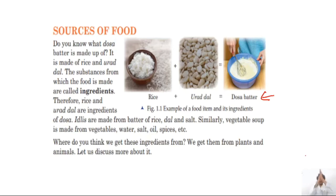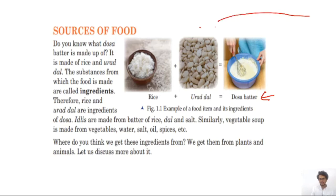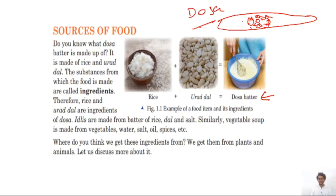When you eat a dosa — with potatoes inside — this dosa is made up of two ingredients: rice and urad dal. Therefore, rice and urad dal are the ingredients of dosa. Idli is made from a batter of rice, dal, and salt. What are the ingredients used to make idli? There are three ingredients: rice, dal, and salt.